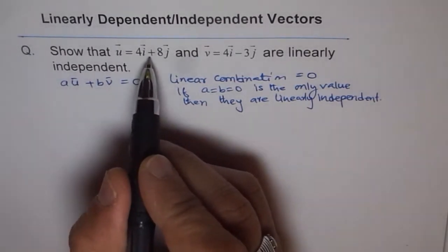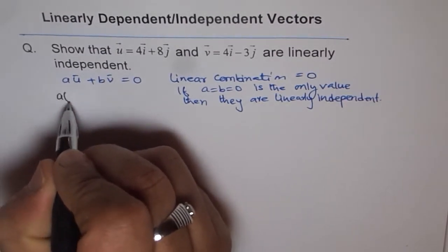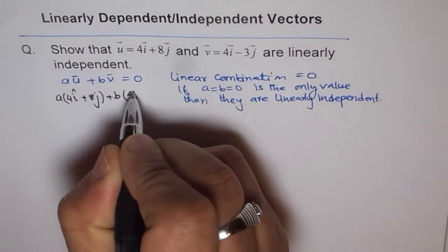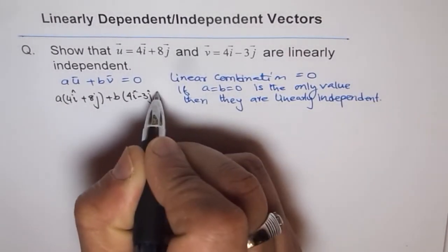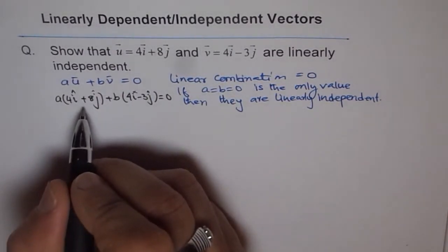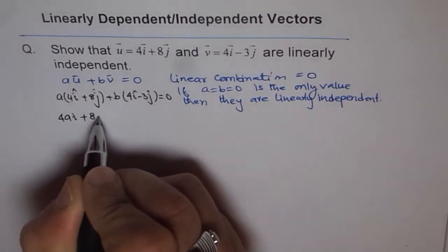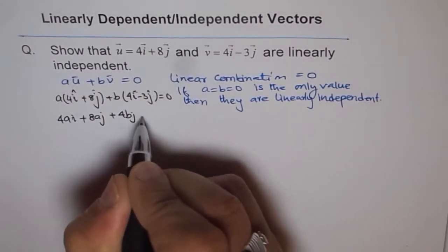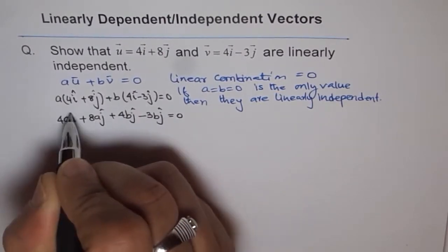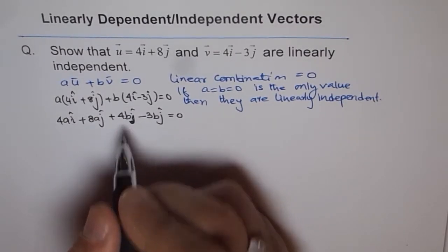Let's start with this and see how it goes. So u is 4i plus 8j and v is 4i minus 3j. Let's substitute these values. So we get a times (4i plus 8j) plus b times (4i minus 3j), where i and j are unit vectors along x and y axis. Now let's expand it and then we will have 4ai plus 8aj plus 4bi minus 3bj equals 0.